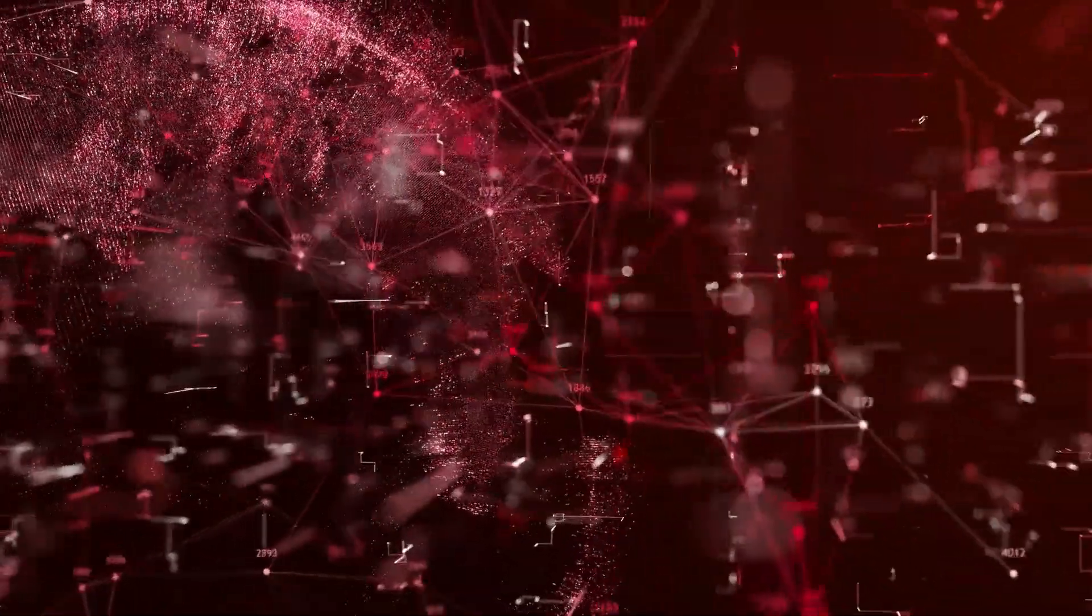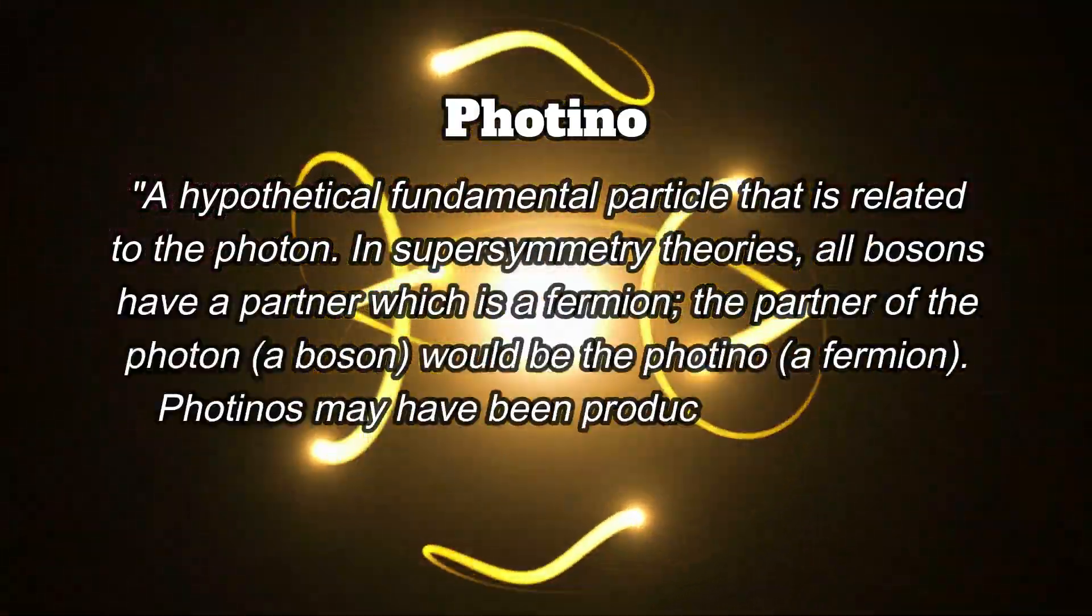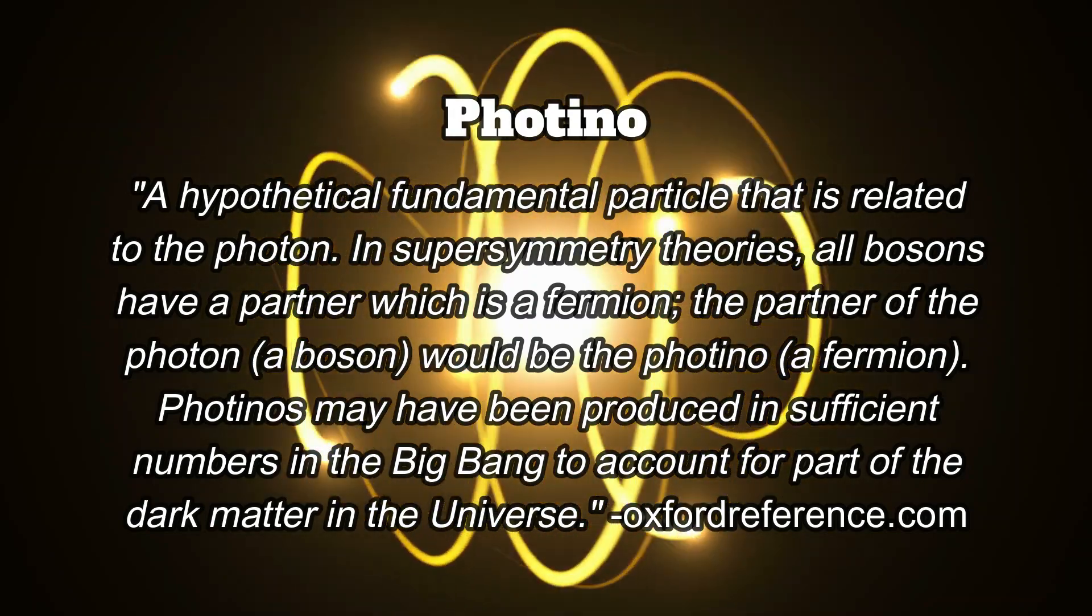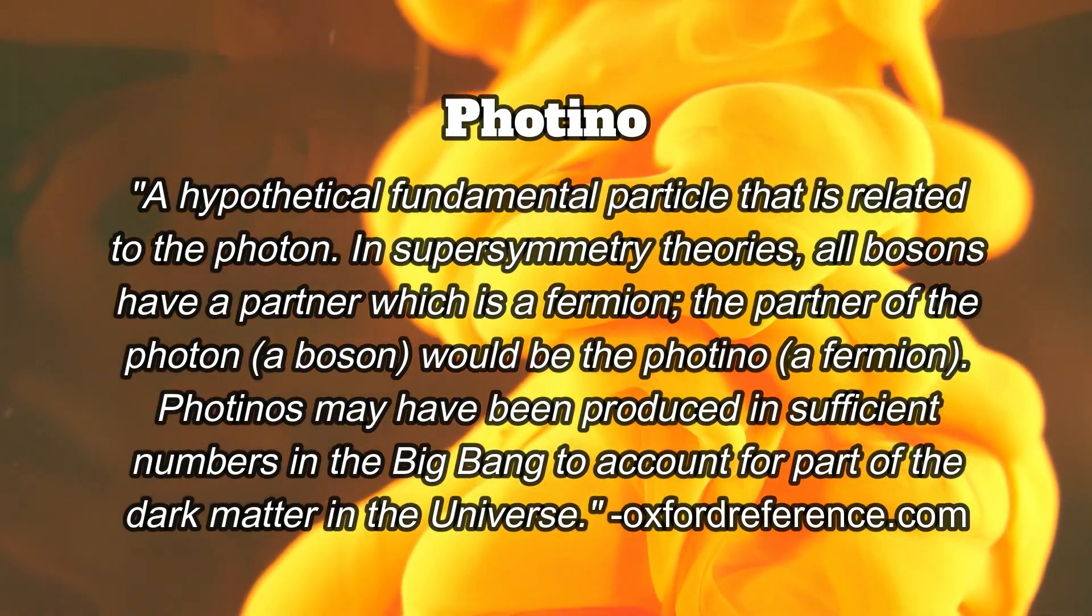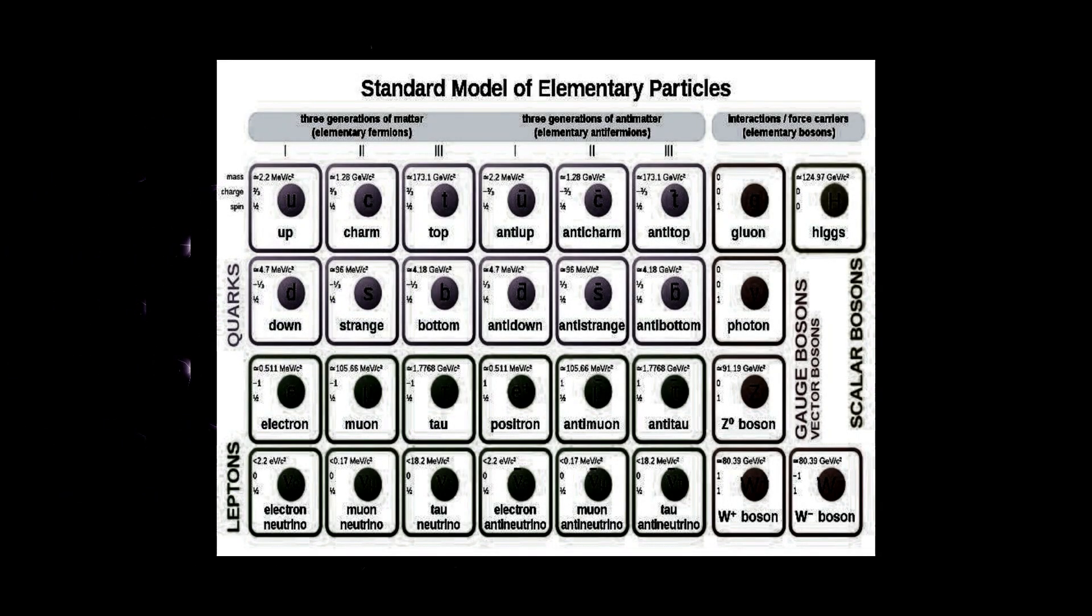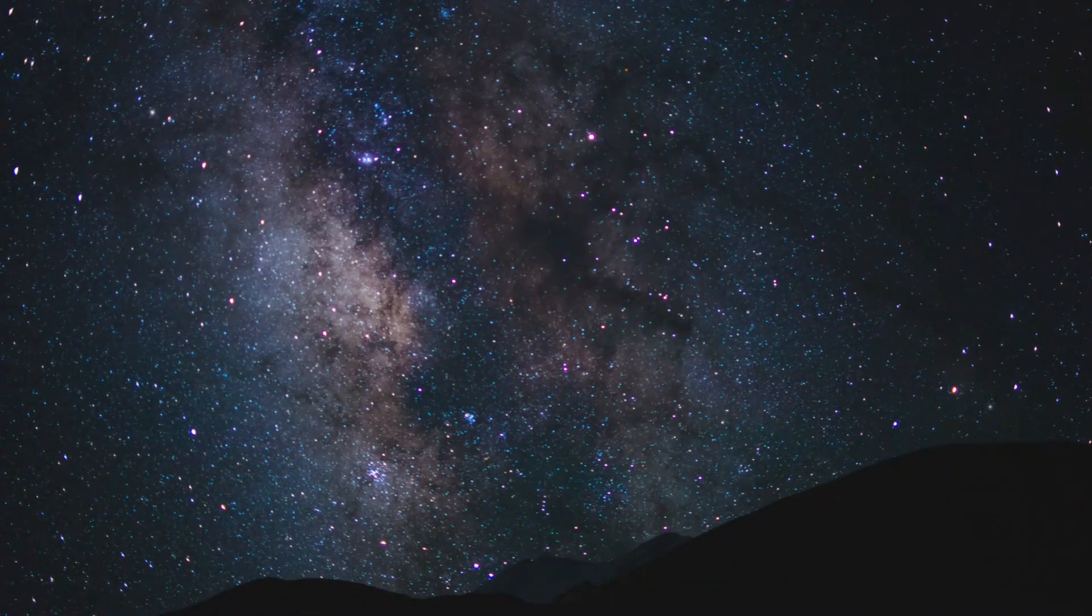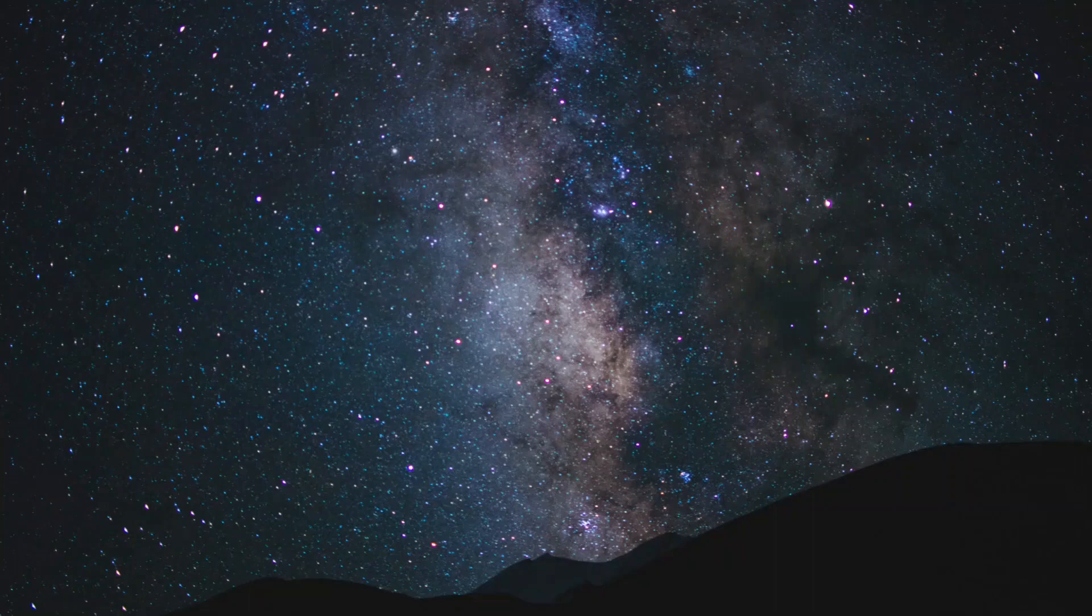As we continue to progress through the current guesses for what dark matter is, our options become more and more speculative, such as our next candidate, which are uncharged photinos. Although thought to be similar to photons, these supersymmetric particles have a mass anywhere from 10 to 100 times greater than that of a proton, while also interacting very weakly with most matter. It is also speculated that dark matter may exist in a complex set of undiscovered particles, which could require a separate standard model for dark matter particles.